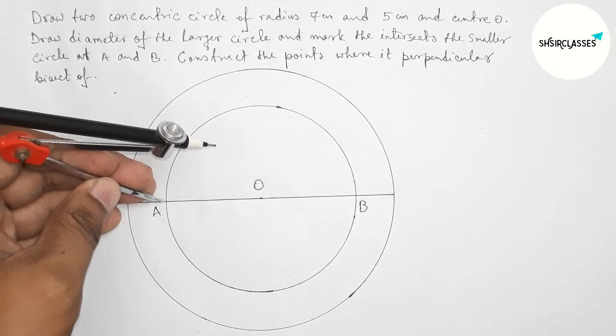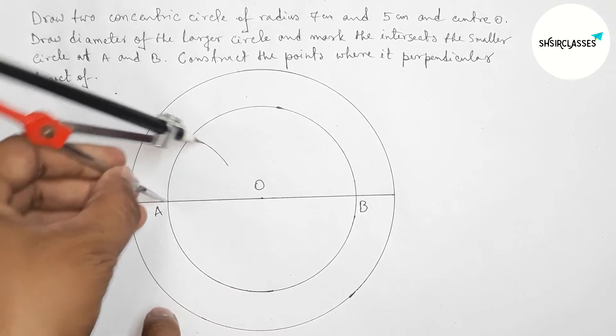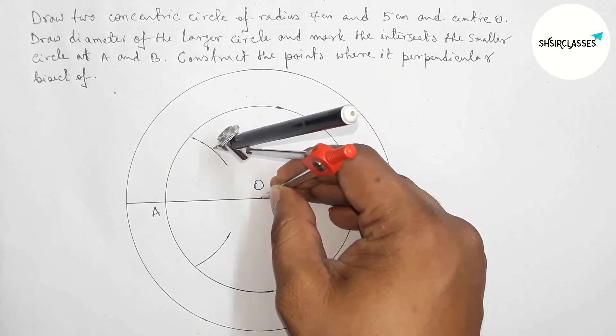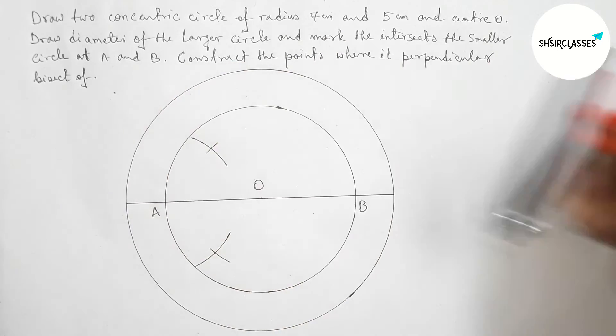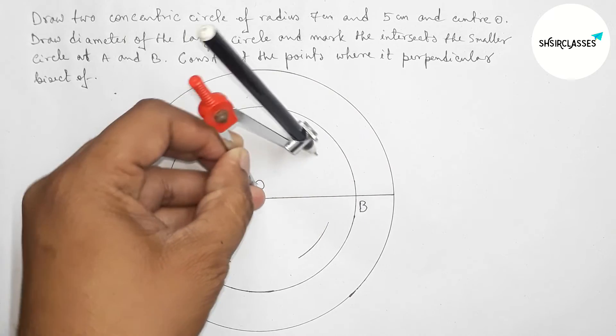Next, bisecting OA. Putting the compass on point A and taking greater than half of OA. Now putting the compass on point O and cutting both arcs. Similarly bisecting OB.